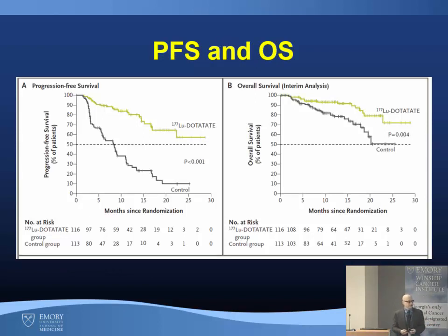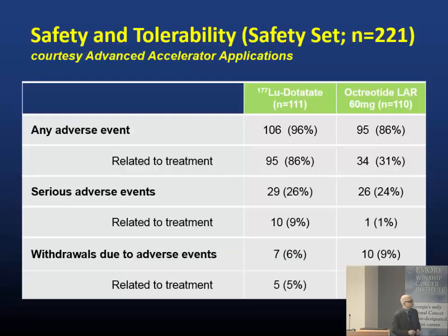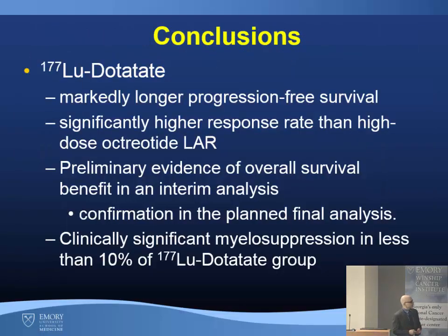Looking at the Kaplan-Meier curves for progression-free survival and overall survival, we see a significant difference with lutetium versus the control group. They concluded there was markedly longer progression-free survival with lutetium, a significantly higher response rate than high-dose octreotide, preliminary evidence of overall survival benefit, and clinically significant myelosuppression in less than 10% of patients. So the toxicity was fairly well managed.